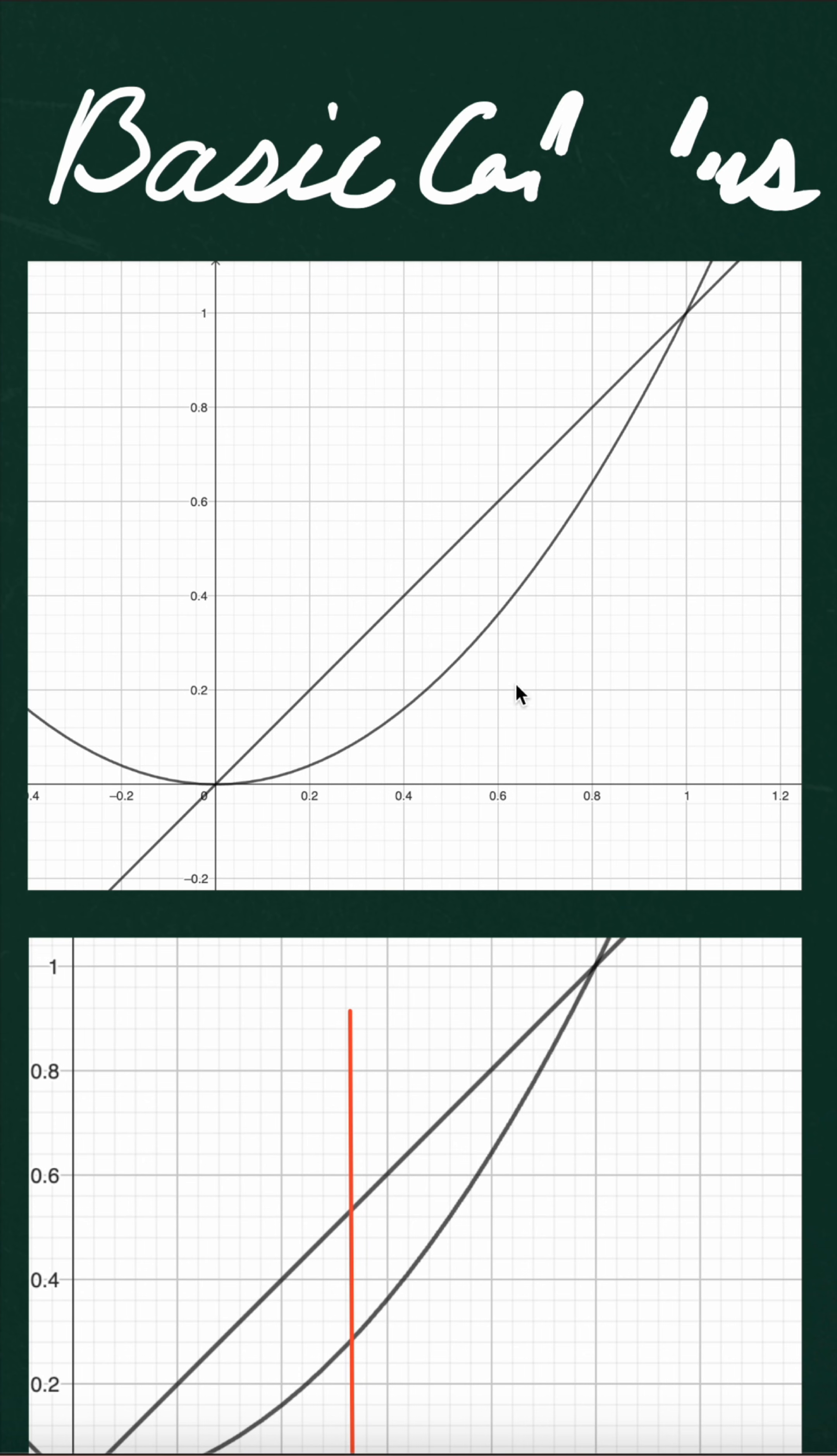Hi guys, welcome back to Math with James. So today we have this problem of two curves in the coordinate. The first one is y is equal to x on the top and then you have y equals x squared underneath.